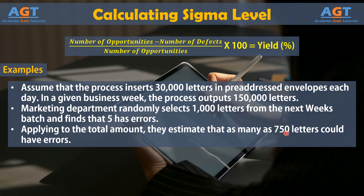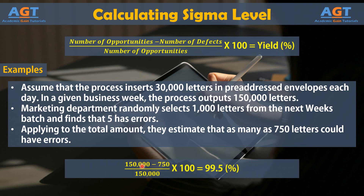We will learn about sampling and extrapolation in depth in the advanced chapters on statistics. The letter process has 150,000 opportunities for error each week and an estimated 750 defects. So, by the formula we get: 150,000 total opportunities, minus 750 defects out of these opportunities, divided by 150,000 opportunities again. Multiplying by 100, we get a yield of 99.5%.